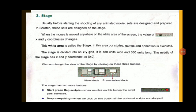Now let's see the Stage. Usually before starting the shooting of animated movies, sets are designed and prepared. In Scratch, these sets are designed on the Stage. When the mouse is moved anywhere on the white area of the screen, the x and y coordinates change. This white area is called the Stage. In this area our story, games, and animations are executed. The stage is divided into an x and y grid — it is 480 units wide and 360 units long. The middle of the stage has x and y coordinates at 0, 0.